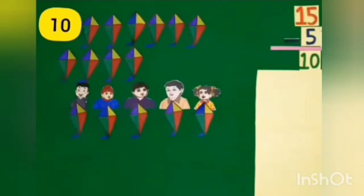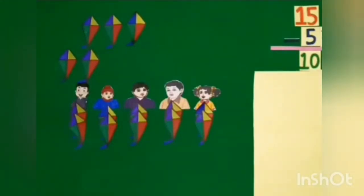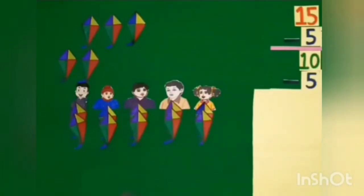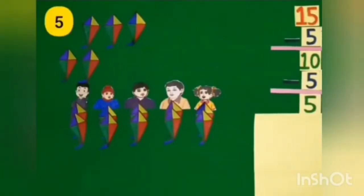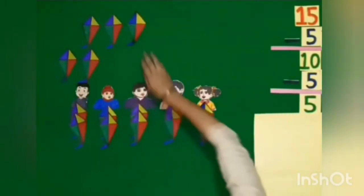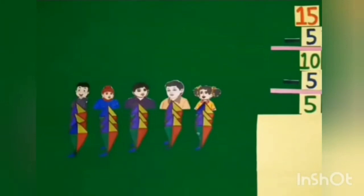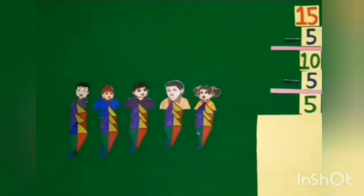Again, to divide these 10 kites, we take 5 kites and give 1 kite to each child. After giving them, we subtract 5 from 10. 10 minus 5 is equal to 5 kites. We are left with 5 kites. Again we take 5 kites and give 1 kite to each child.